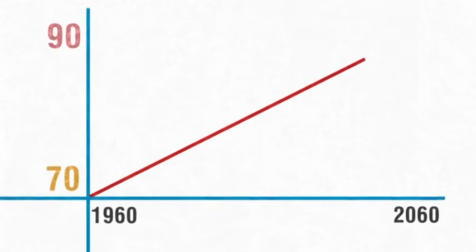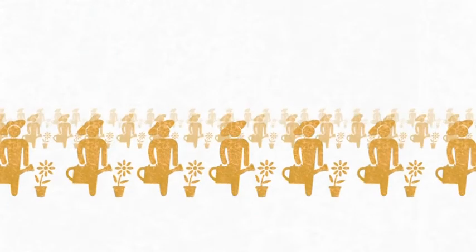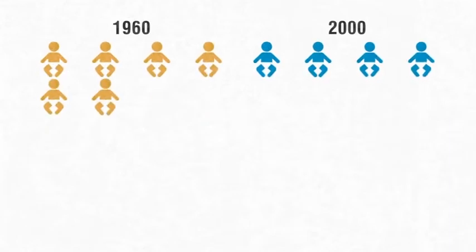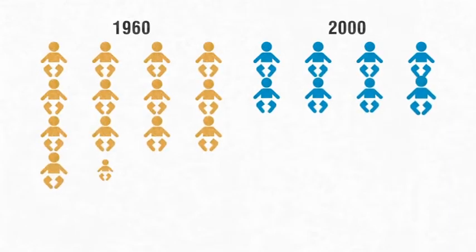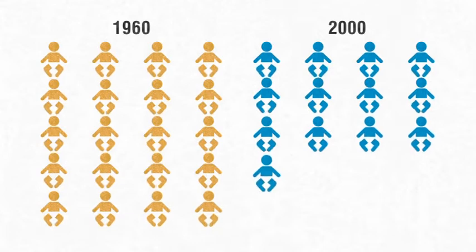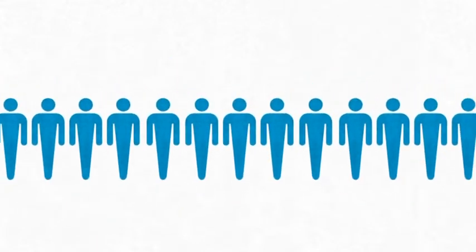But as people live longer, the number of retired is rising. And since fewer children were born within the EU in recent decades, as compared with past generations, the number of people of working age is falling.